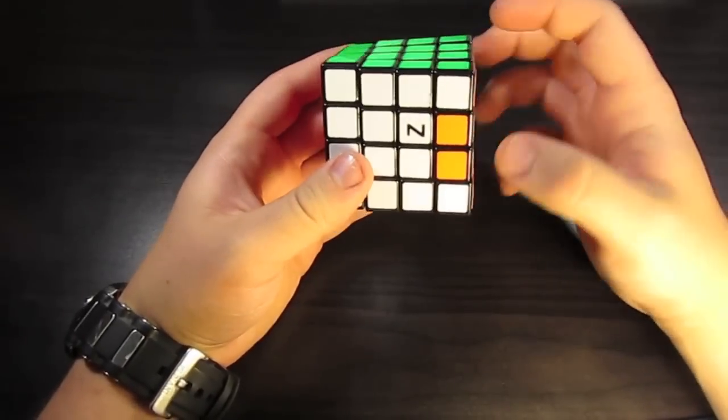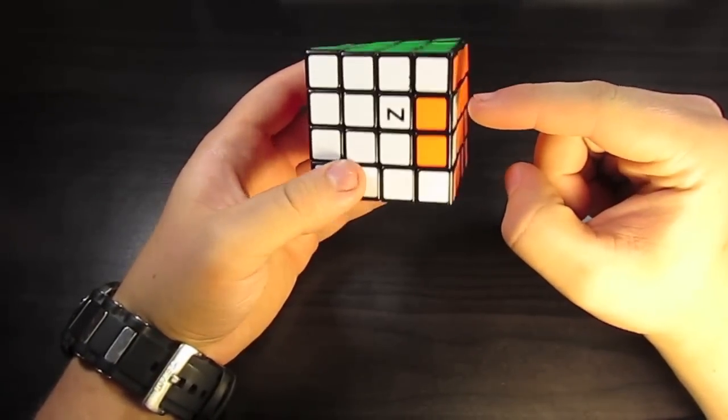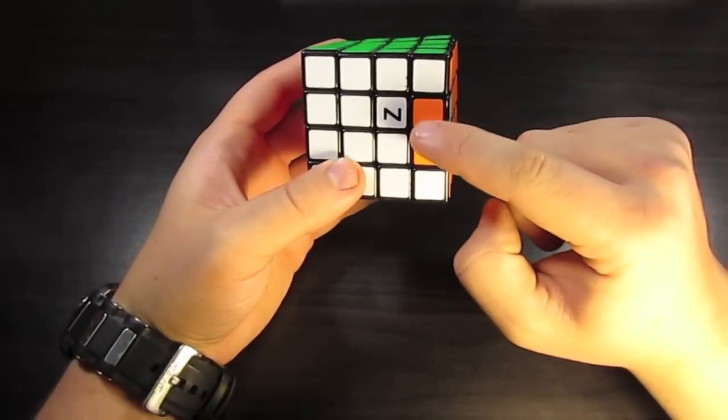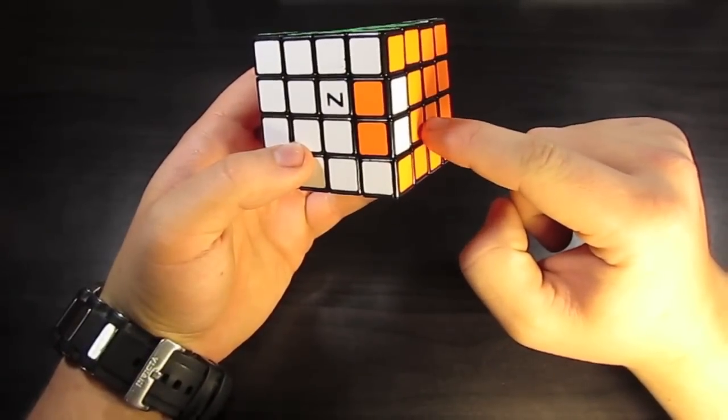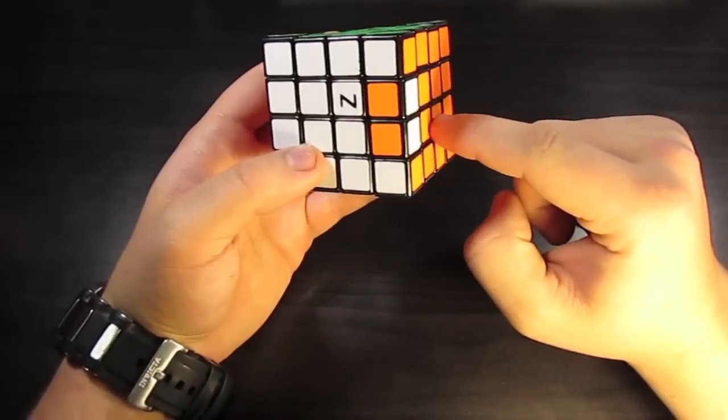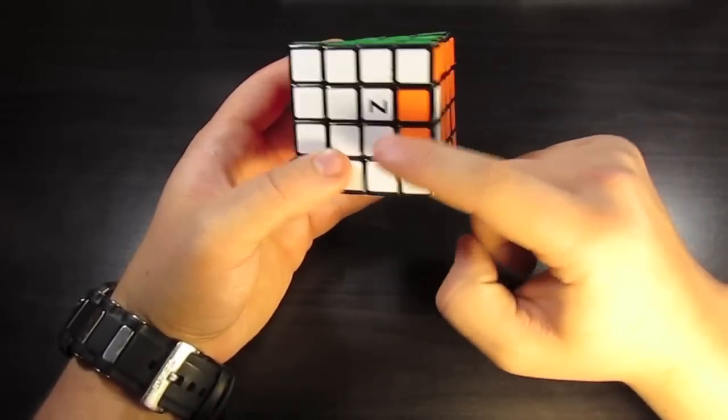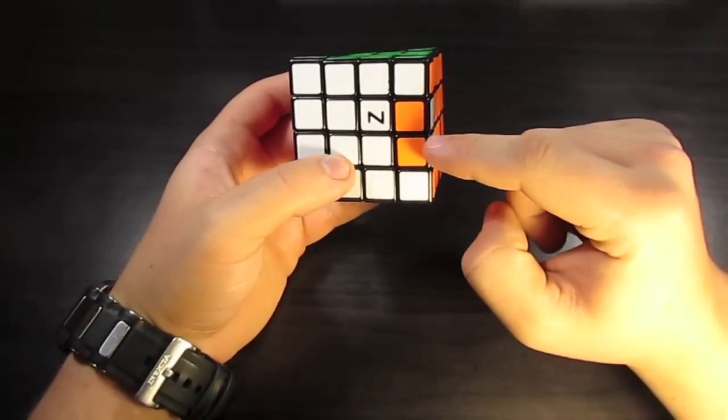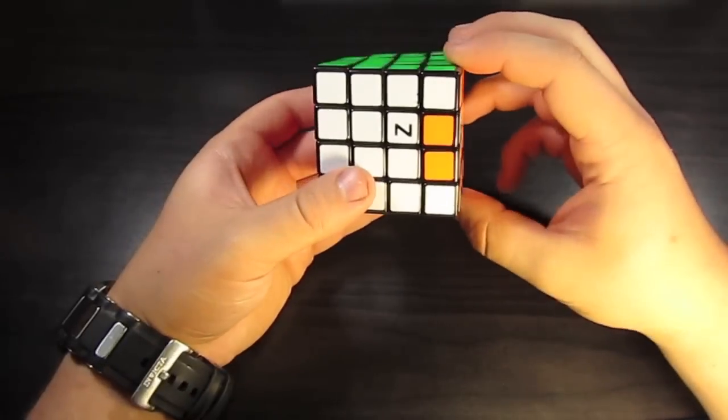And what you want to do is you want to do the cuboid algorithm that would move this piece to right here. Since orange is on the opposite side, orange is on the white side, and white is on the orange side, you know, this piece is good to go right down here, with that cuboid algorithm that goes like this.